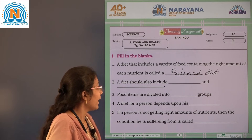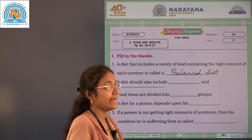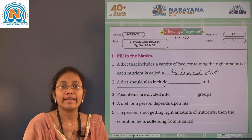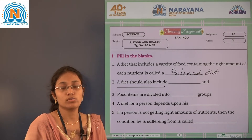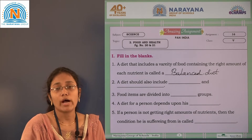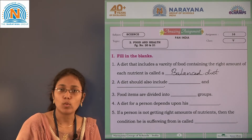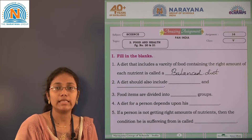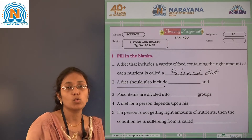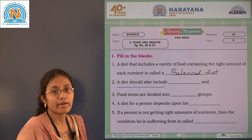See the second blank: a diet should also include two more things. Along with vitamins, carbohydrates, proteins, fats, and minerals, a diet should also include water and roughages.